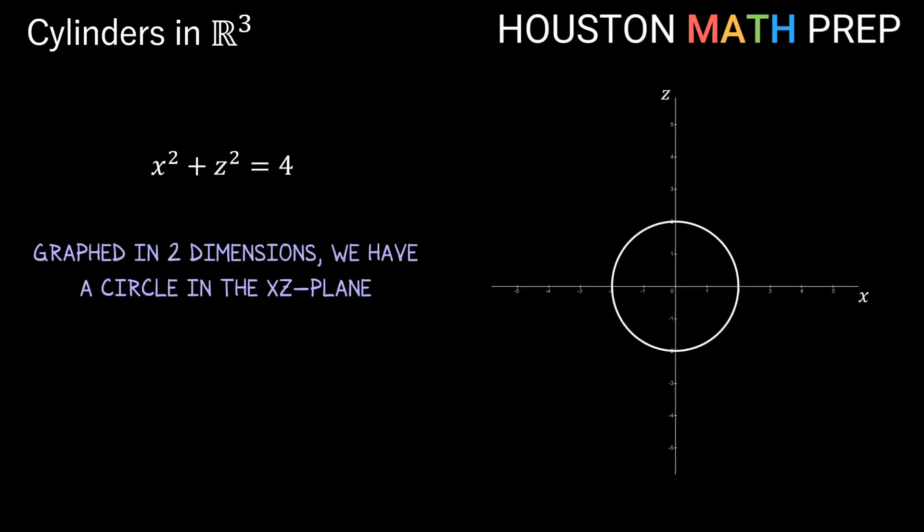For our next example: x² + z² = 4. If we plot this in a 2D plane, it would need to be a plane with x and z axes. If we plot x² + z² = 4 in an xz plane, this is actually a circle centered at the origin with radius 2.